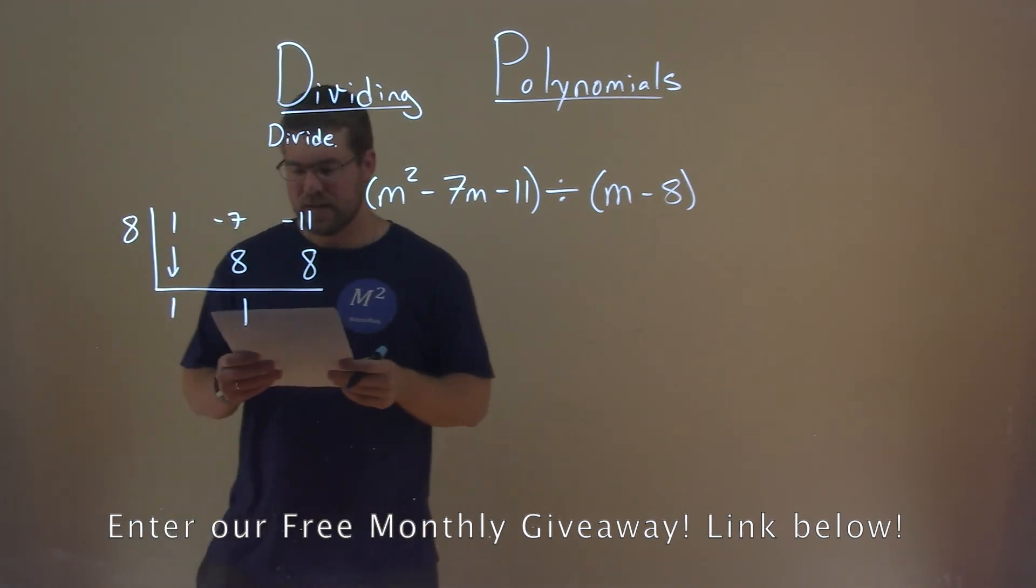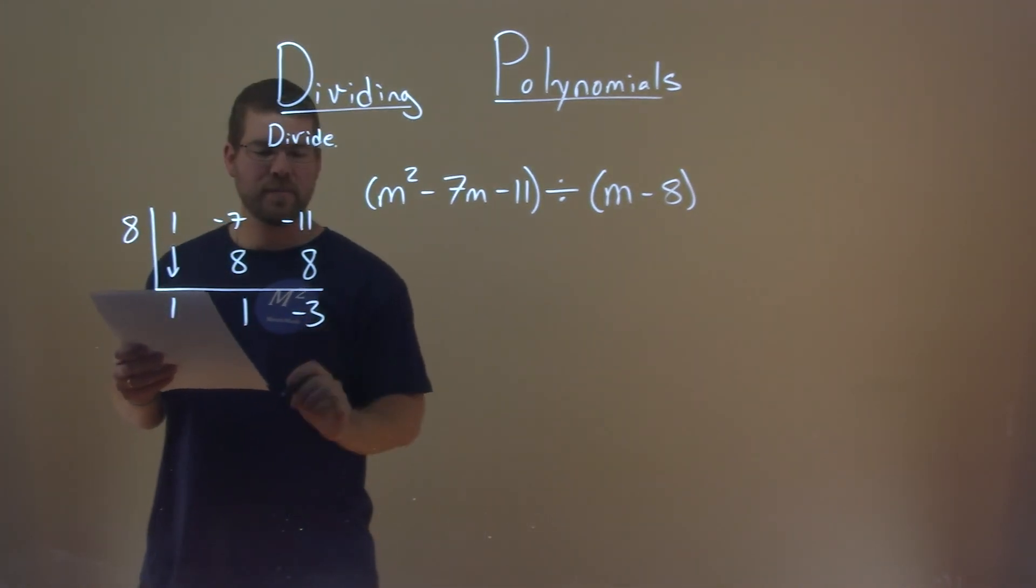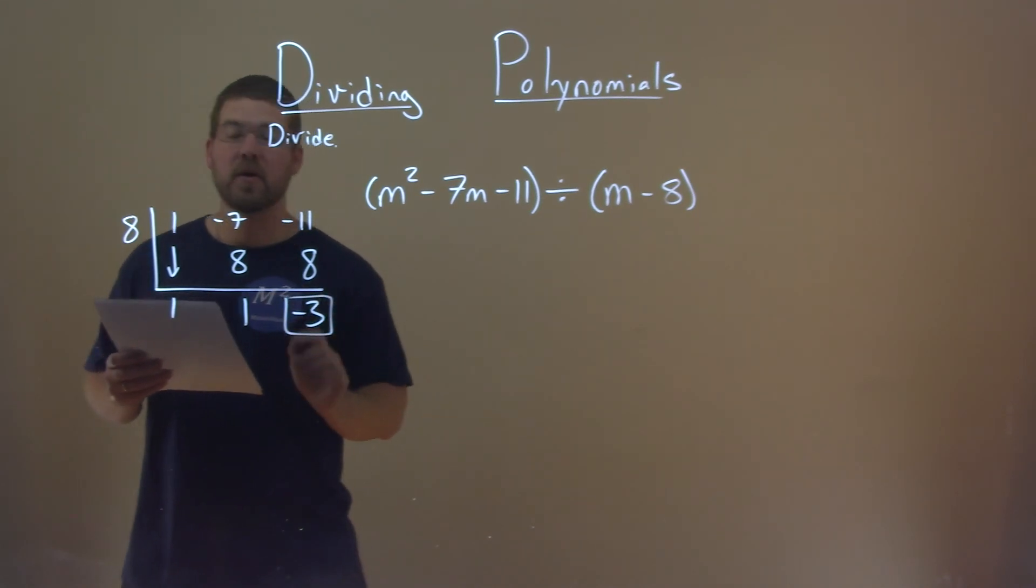Negative 11 plus 8 is a negative 3, and this is going to be our remainder.